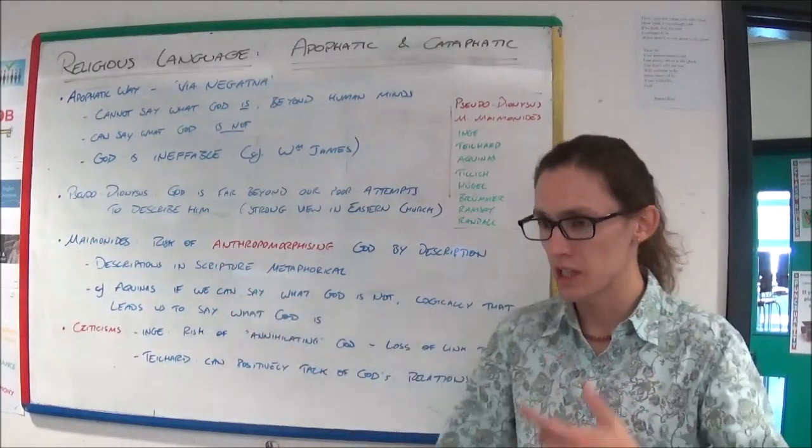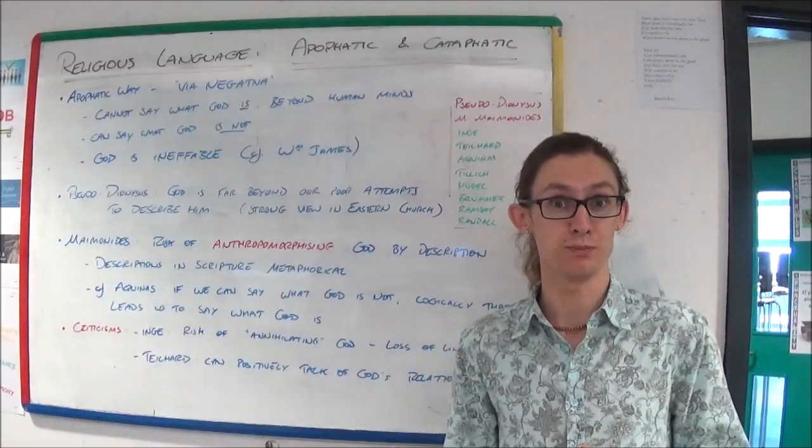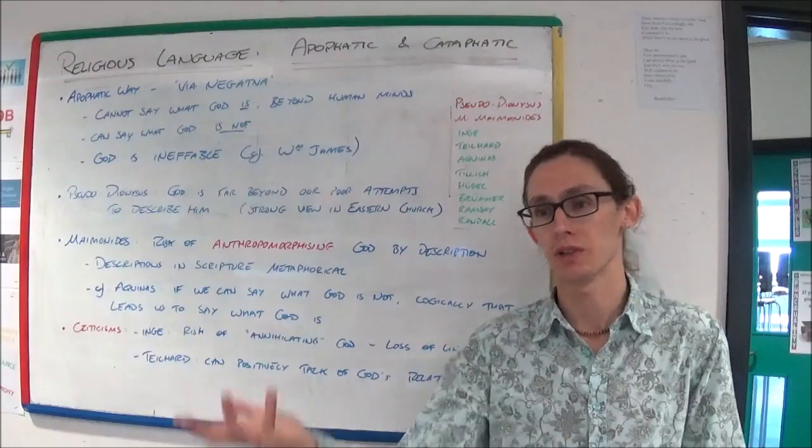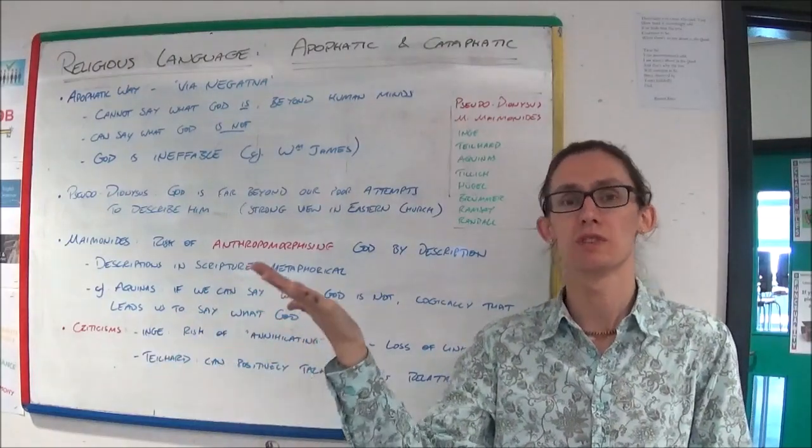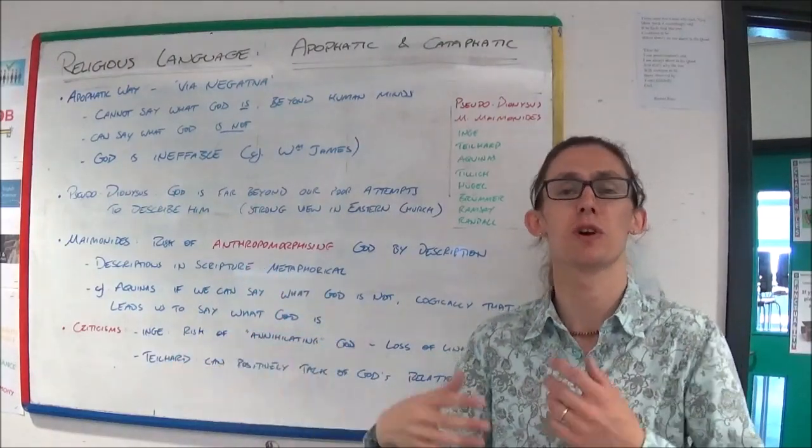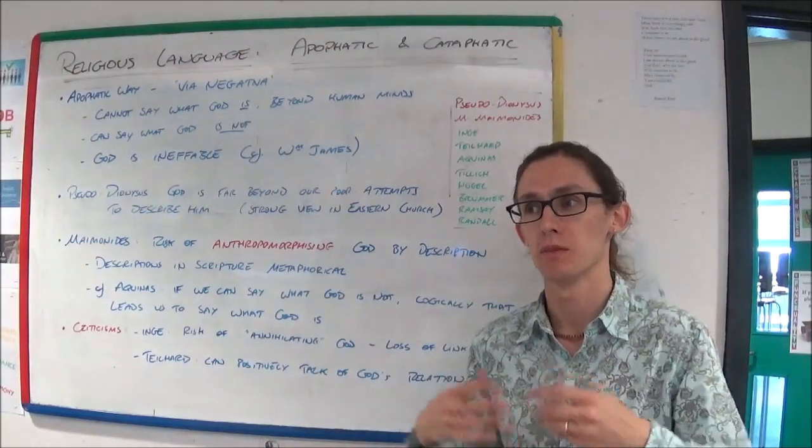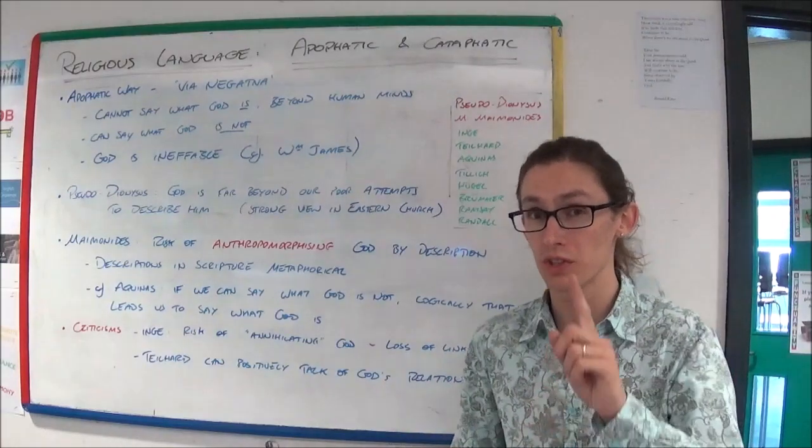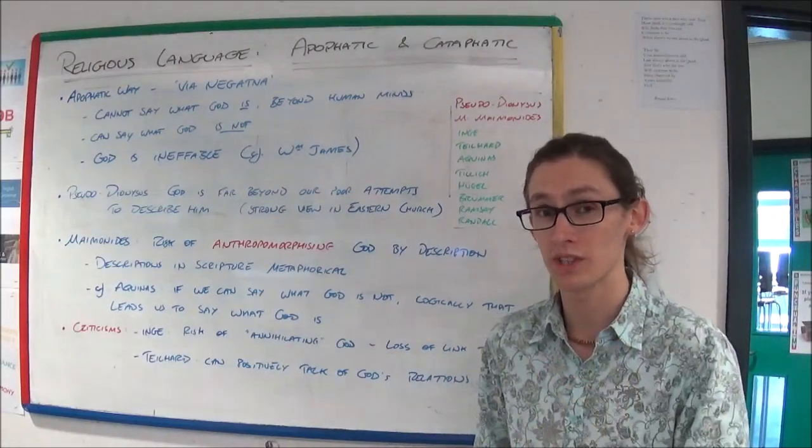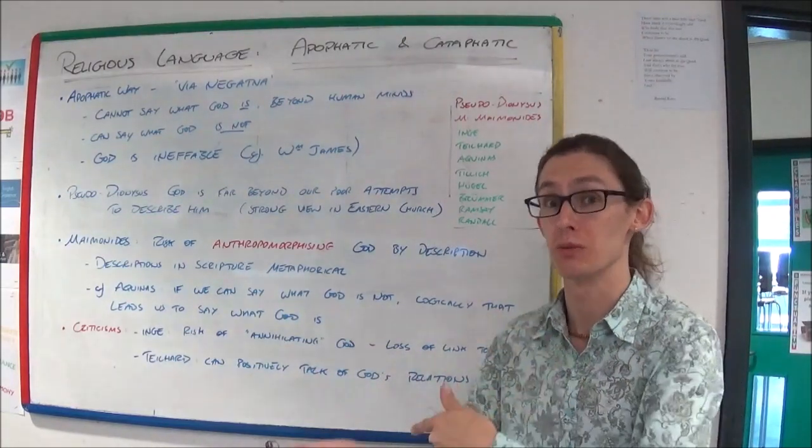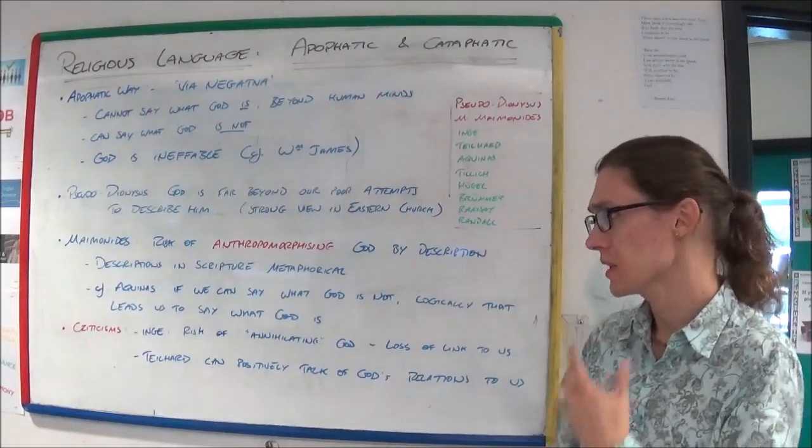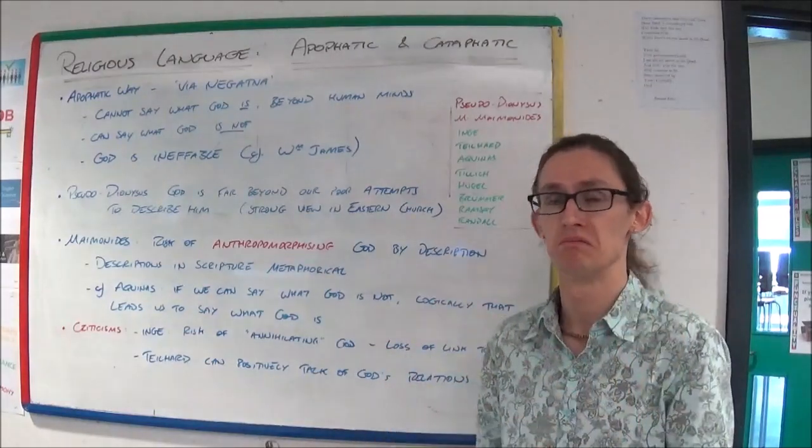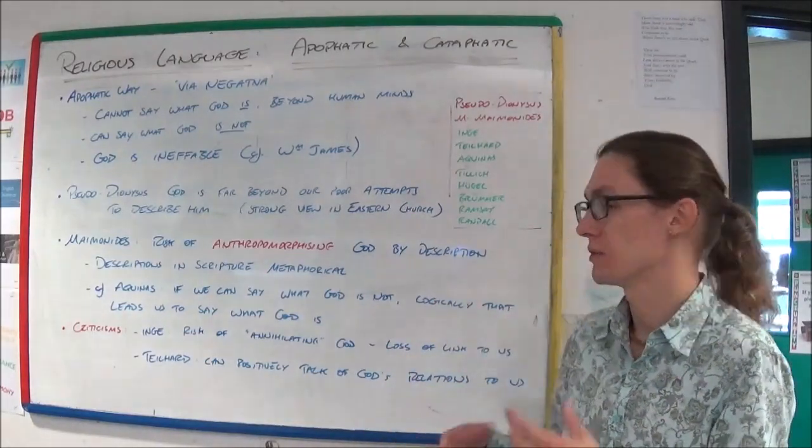Descriptions in scripture in the Bible are metaphorical, or should be seen as metaphorical. So when talking about God's right hand, that's not a true description, that's trying to imply to us in a way that we can understand what God is. Although this is a bit more linked to Aquinas' idea of analogy, which comes later in the video. But basically we can only truly say what God is not. Anything else is just a description, a metaphor.